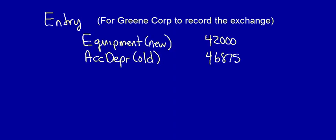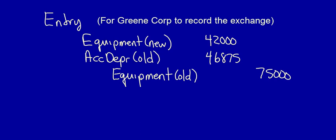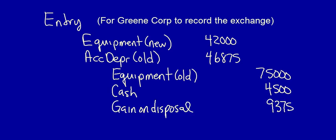We record the new equipment at the fair value given up. We get rid of the old accumulated depreciation that relates to the old equipment — that was given in the chart. We also have to get rid of the old equipment, then recognize the cash we paid. This entry does not balance — in fact, I have a gain on disposal. Is there any other way we can calculate the gain? Yes — I can calculate it as a plug, whatever is necessary to make this entry balance, but I can also mathematically calculate it.